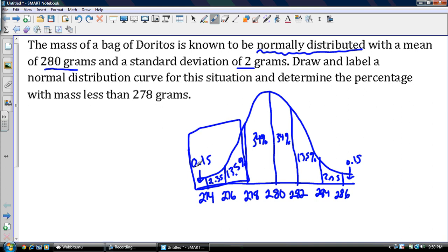So I got 13.5 plus 2.5, so that's going to be 13.5% plus 2.5%, and that's going to give me 16%. So 16% of the Dorito bags have a mass less than 278 grams. So that's really what the question is asking us.